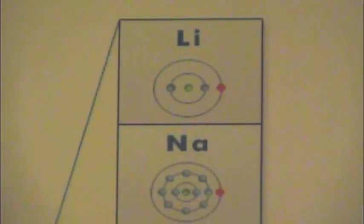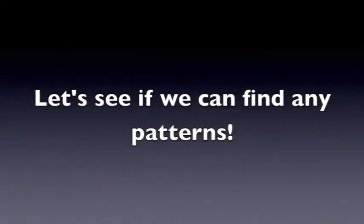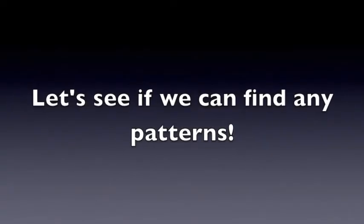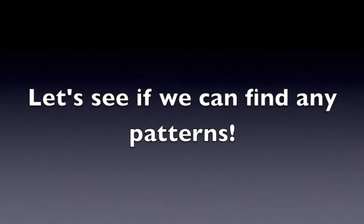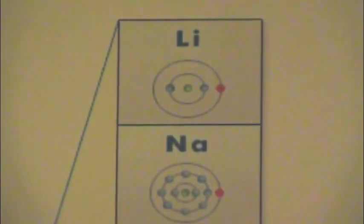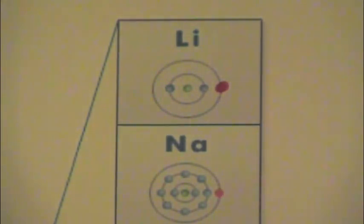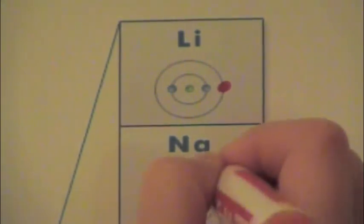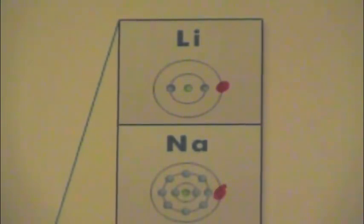This is the first column of the periodic table. We are looking at lithium and sodium. Now, if you notice, they have the atomic structure of each underneath their label. So, lithium has one valence electron, and sodium has one valence electron. They are both very reactive elements.